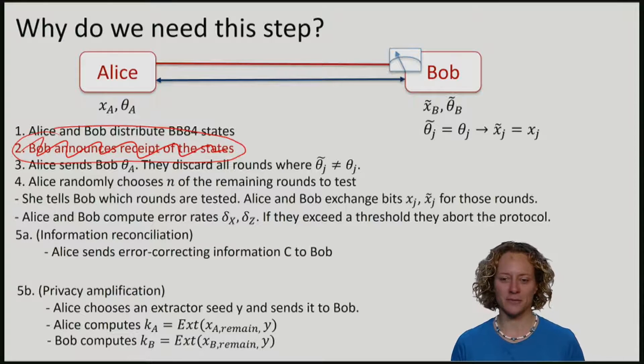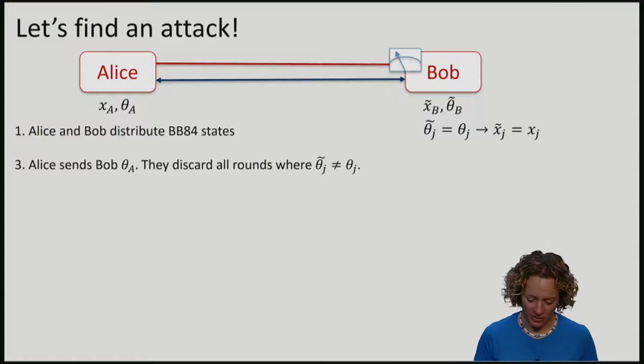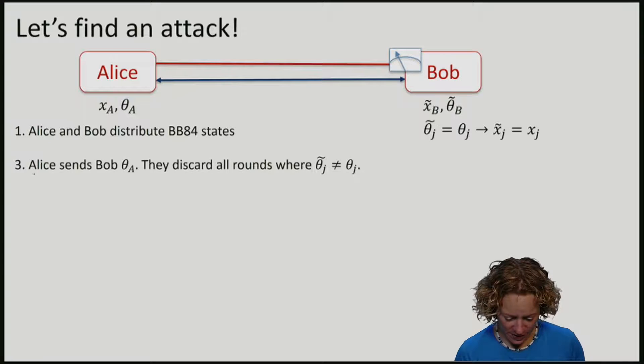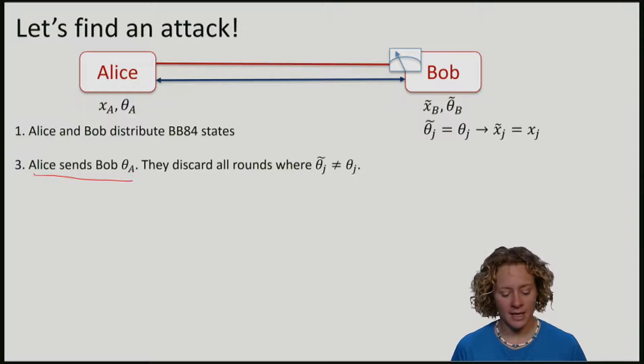Let's now imagine that we are Eve. Alice and Bob distributed BB84 states. And now Alice is going to send Bob her basis string theta. If Alice sends her basis string theta to Bob over the classical channel, Eve can of course also read the basis string.